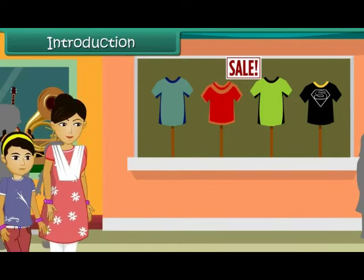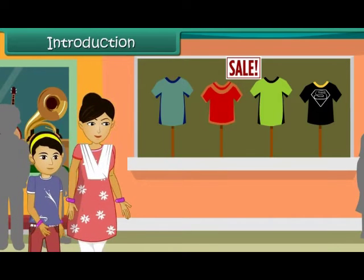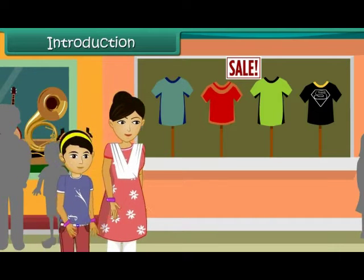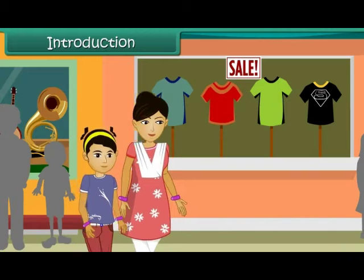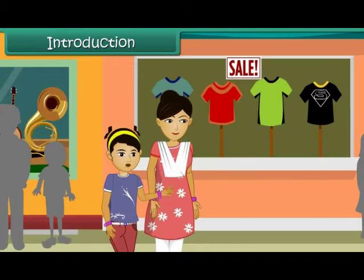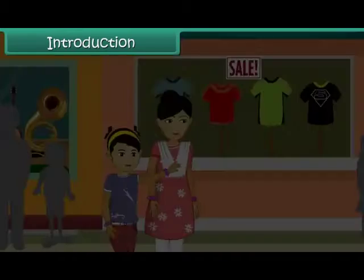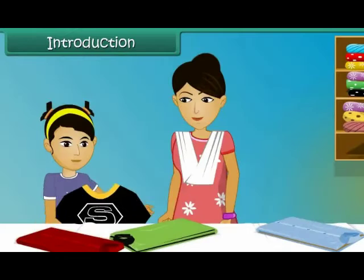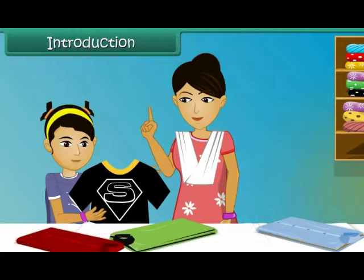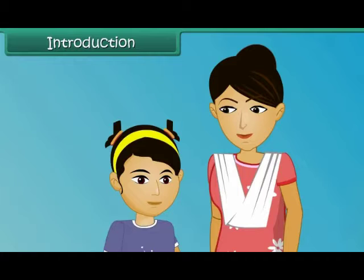Ananya is at a garment store with her mother. She is buying clothes for the summer season. She selects a black t-shirt, but her mother rejects it. Ananya wants to know why. Ananya's mother tells her that dark clothes are not right for summers.